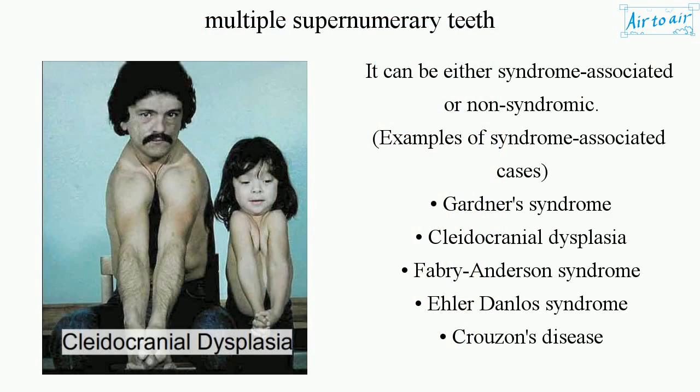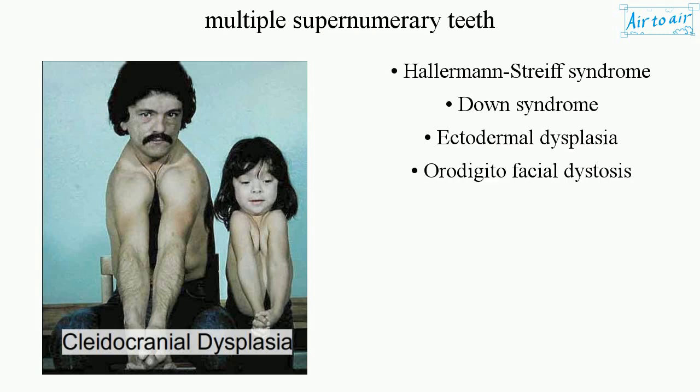It can be either syndrome-associated or non-syndromic. Examples of syndrome-associated cases include Gardner's syndrome, cleidocranial dysplasia, Fabry-Anderson syndrome, Ehlers-Danlos syndrome, Crouzon's disease, Hallermann-Streiff syndrome, Down syndrome, ectodermal dysplasia, and oro-digito-facial dysostosis.